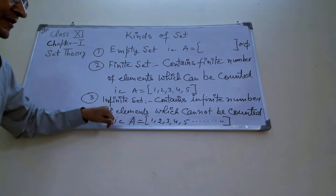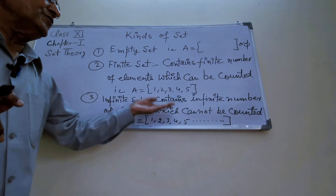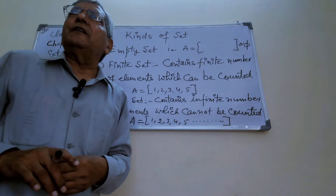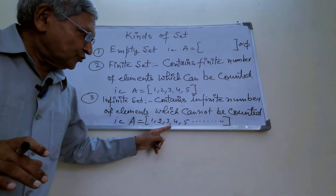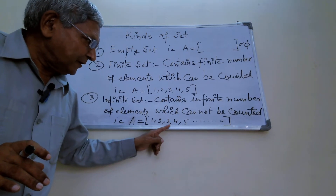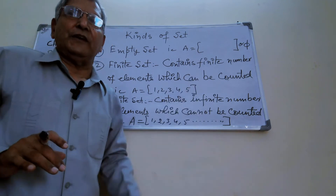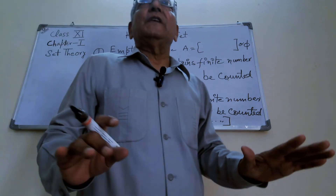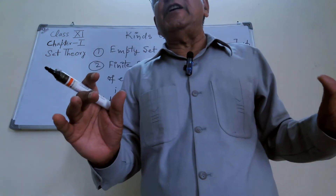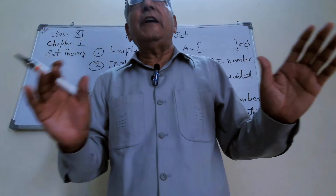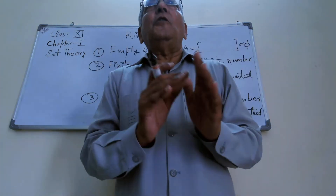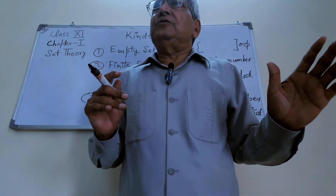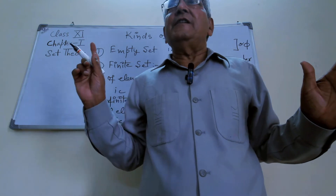Third kind: infinite set. An infinite set contains an infinite number of elements which cannot be counted. For example, {1, 2, 3, 4, 5, ...} up to infinity. You cannot find out all the elements of it — this set cannot be counted, so this is an infinite set. In a finite set, all the elements can be counted. In an infinite set, all the elements cannot be counted.